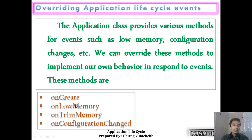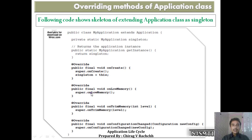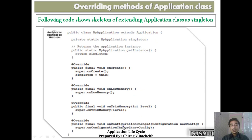The methods available are: onCreate, onLowMemory, onTrimMemory, and onConfigurationChanged. A skeleton is provided where these methods are overridden. In MyApplication extending Application, a singleton object is declared; getInstance returns the singleton; onCreate assigns the reference. onLowMemory — when memory is low, we can write our own code. onTrimMemory — when memory is trimmed or compacted, a method is available. onConfigurationChanged — if the device's configuration changes, this method is called for the application's configuration change.